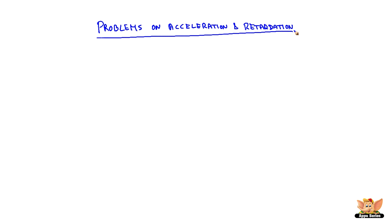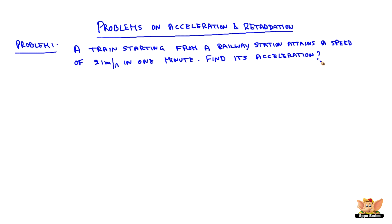Let us see some problems on acceleration and retardation. Problem 1: A train starting from a railway station attains a speed of 21 meters per second in 1 minute. Find its acceleration.